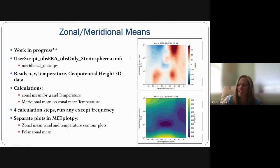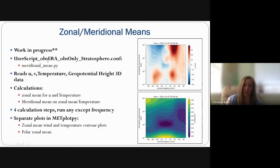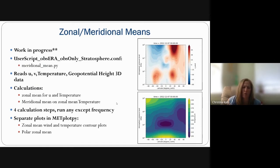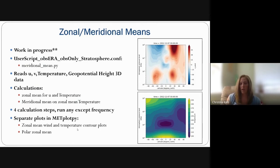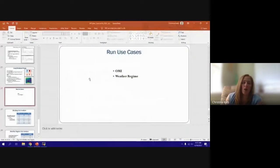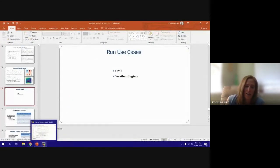A new feature in progress going into METplus is the ability to compute zonal and meridional means, implemented in one of the stratosphere use cases. It takes U, V, temperature, and geopotential height as 3D data and calculates the zonal mean for U and temperature, and then a meridional mean on the zonal mean temperature. Plotting is currently separate in METplotpy, and there will be additions to this use case in the future.